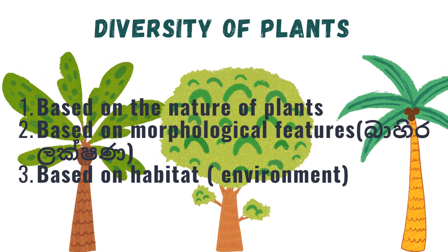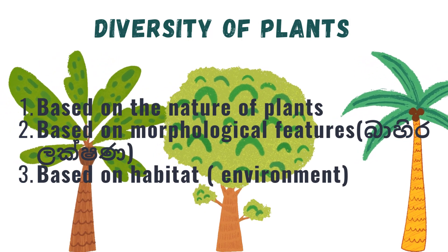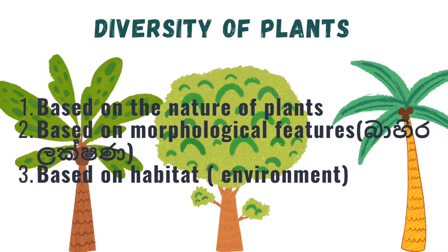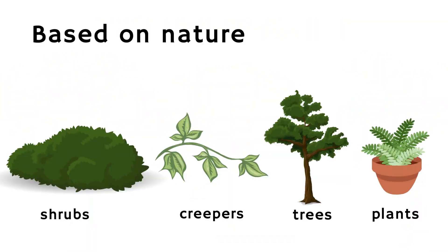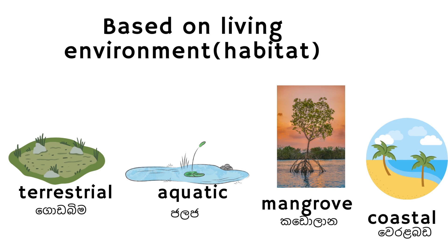Now let's discuss about the diversity of plants. For easy understanding, we divide plants based on the following features: based on the nature of plants, based on morphological features, and based on habitat environment. Based on nature, they can be categorized as herbs, trees, shrubs, and creepers. Morphological features such as roots, stem, leaves, flowers, shape, size, and color of fruits and seeds are also used as a method of categorization. Plants grow not only in terrestrial environments but also in aquatic, coastal, and mangrove environments.